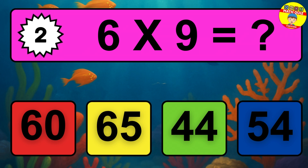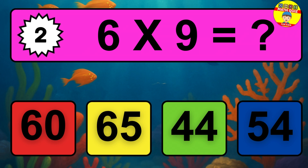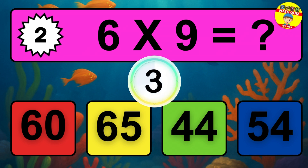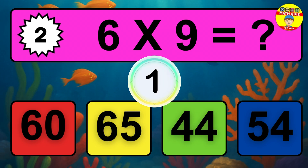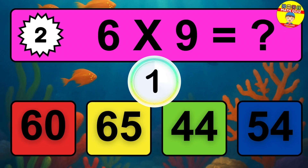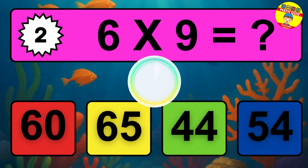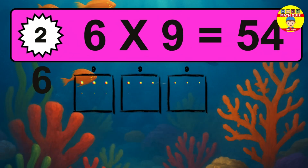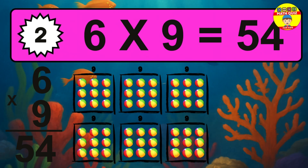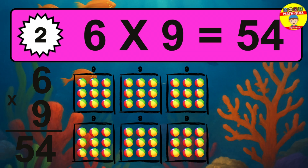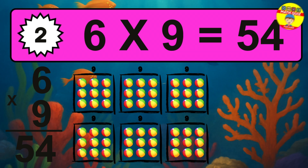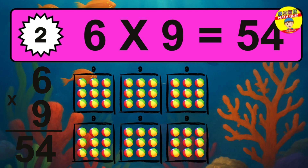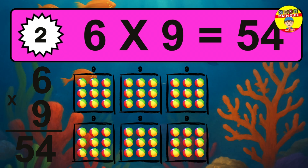Question 2. 6 times 9 equals what? The answer is 6 times 9 is 54. To calculate, we have 6 groups with 9 balls each one. So, how many balls do we have?